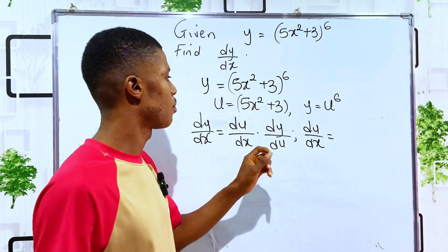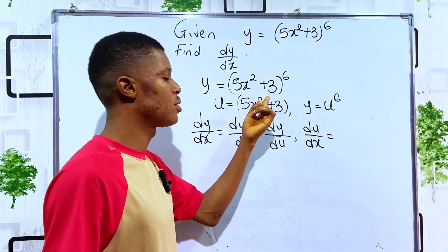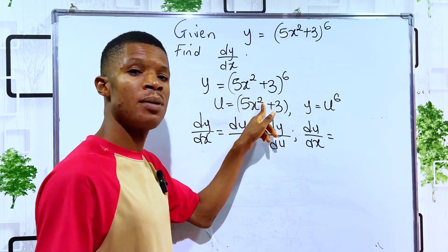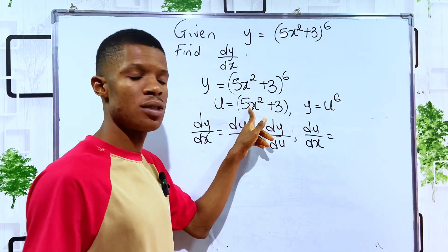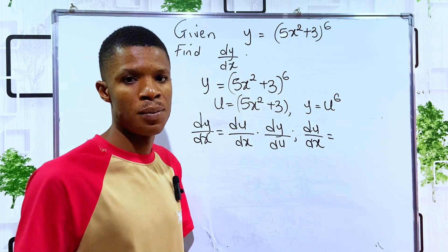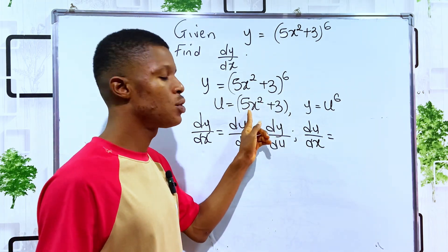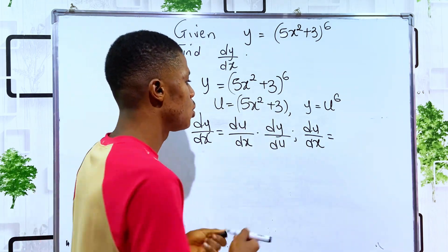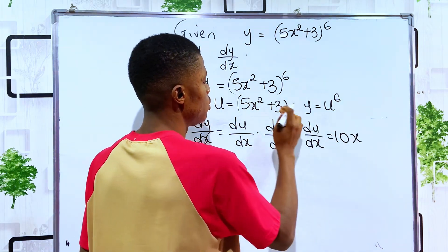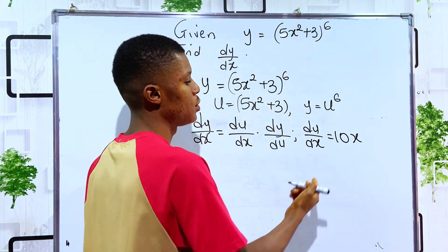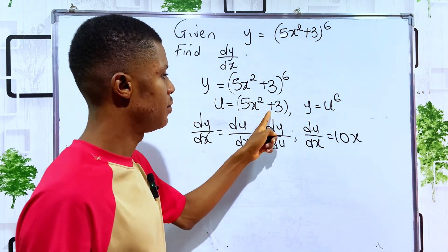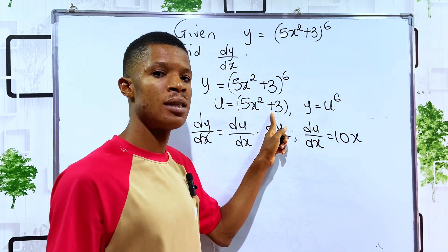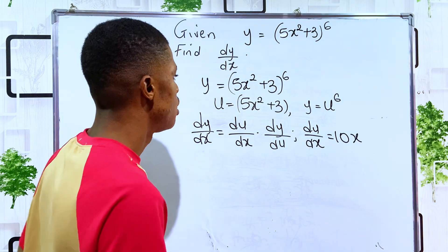So our du/dx, differentiating u with respect to x: to differentiate 5x squared, we multiply the power 2 to the constant, then minus 1 from the power. So 5 times 2 is 10, so we have it as 10x. 2 minus 1 is 1, so 10x is the derivative. Differentiating a constant 3 gives 0. That's done.